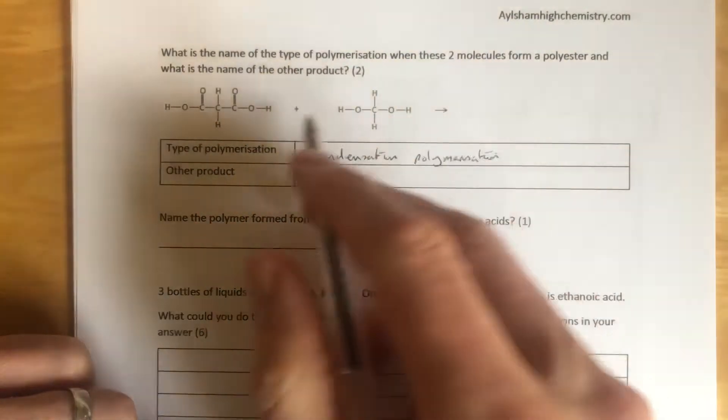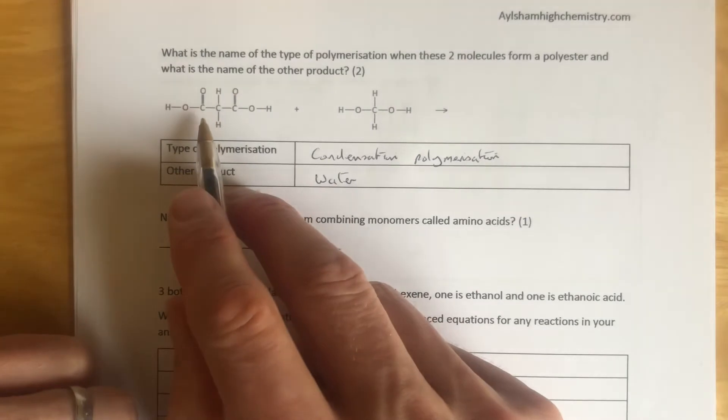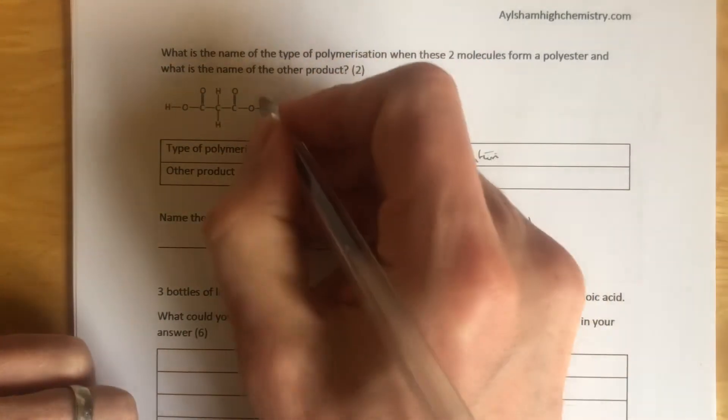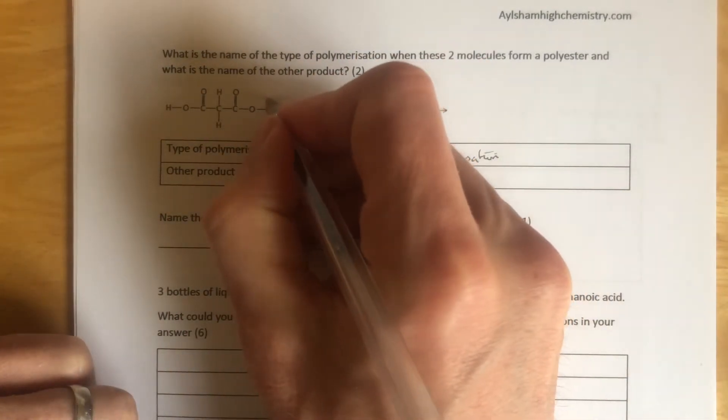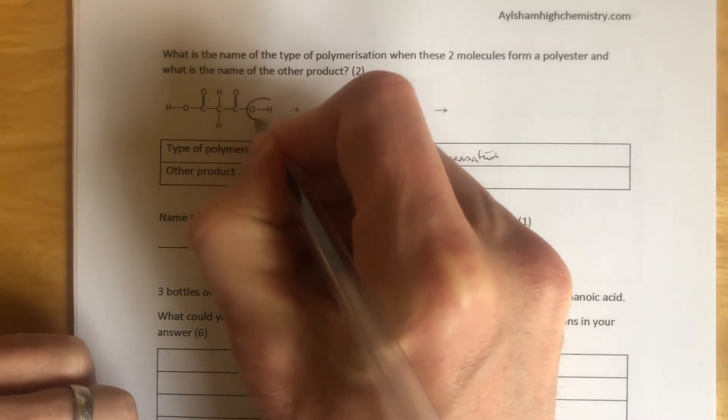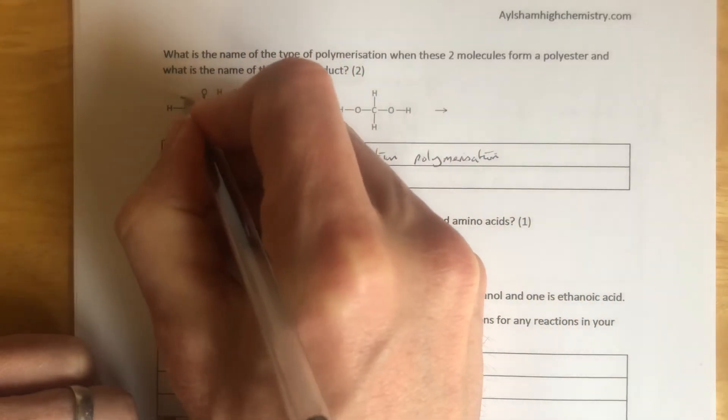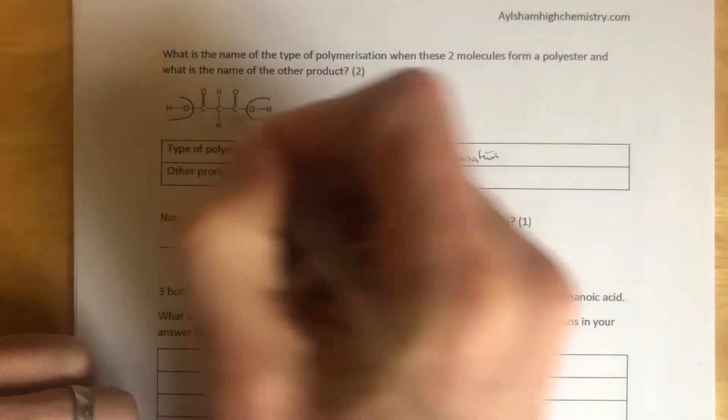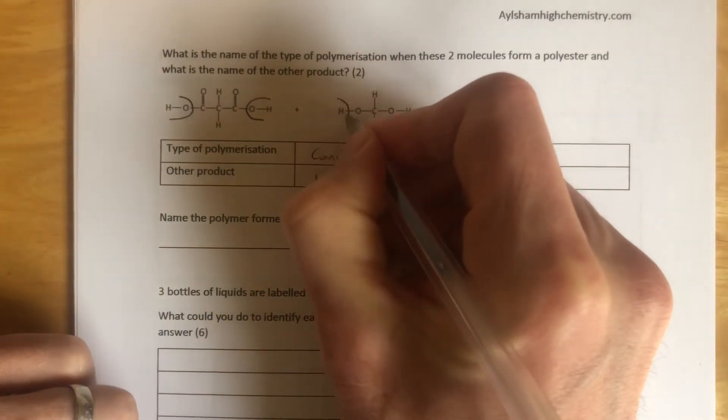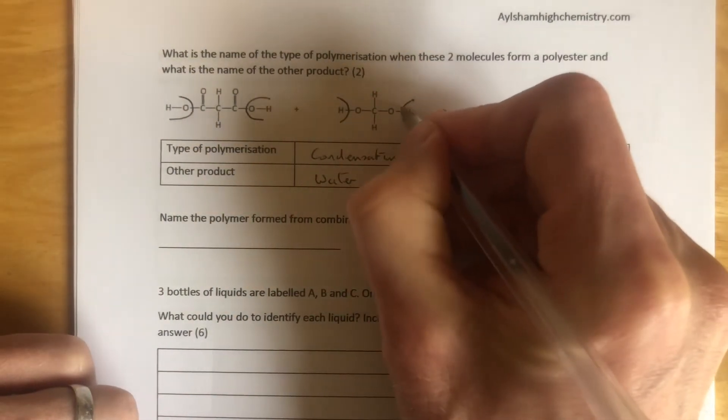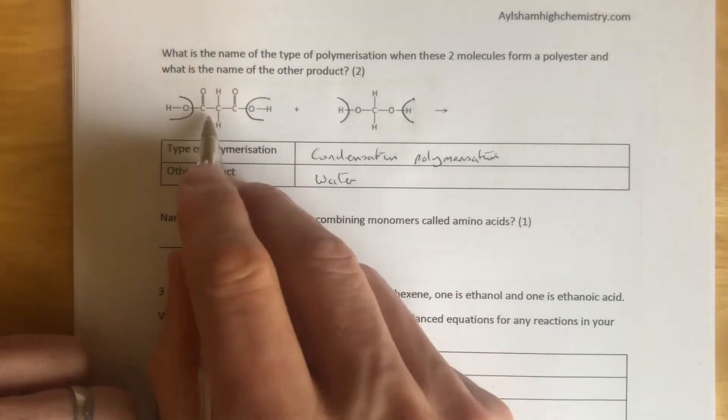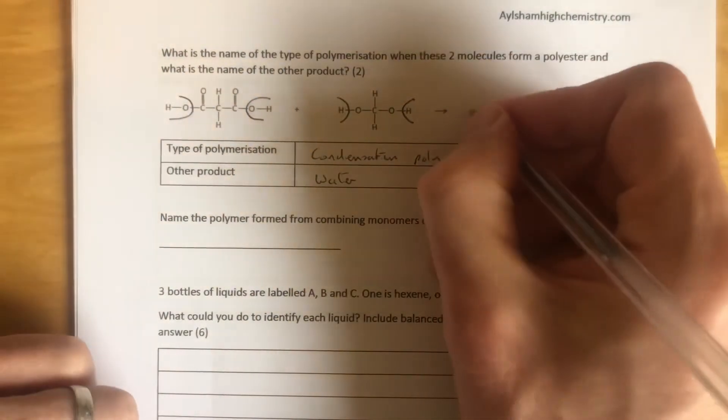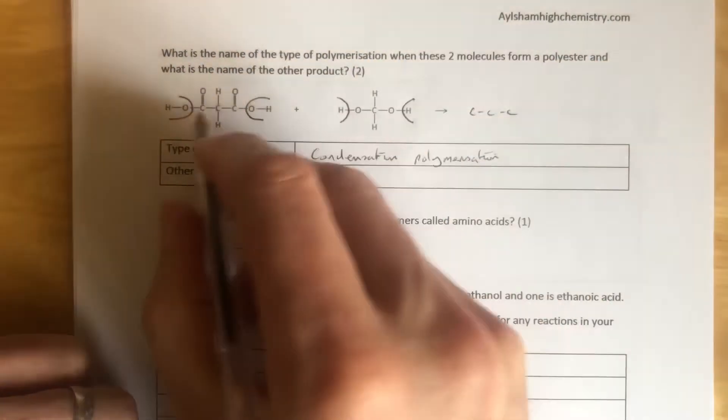Just to quickly draw the polyester here in case it's of interest, because this could well be an exam question as well. We'd chop off the oxygen hydrogen from the carboxylic acid functional groups, we'd chop off the hydrogen from the alcohol functional groups, and then we simply copy out what's left. So three carbons, one two three carbons, double bond...